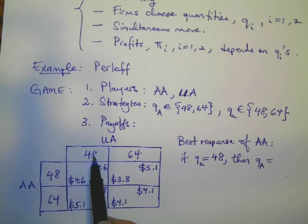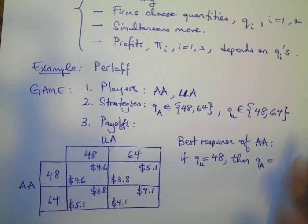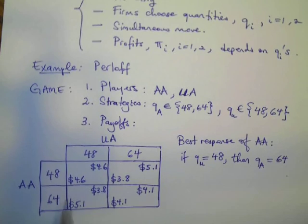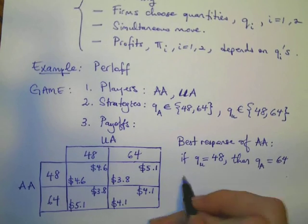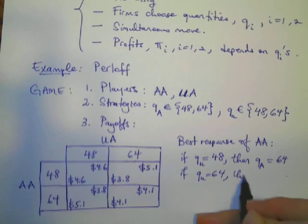Then, for American Airlines, the best strategy is to fly, well, if my rival flies 48,000 passengers, I have to make a choice between flying 48,000 or 64,000 passengers. In which case, I respectively earn 4.6 and 5.1 million dollars. So I should fly 64,000 passengers, which earn me more profit.